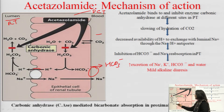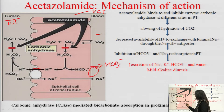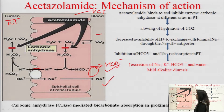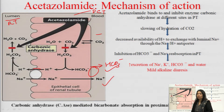Sodium ion, in exchange with hydrogen ion, enters from the lumen into the cell, and from inside the cell it is transported into the blood via a transporter. So sodium reabsorption and bicarbonate reabsorption both occur in the cells of the proximal convoluted tubule.